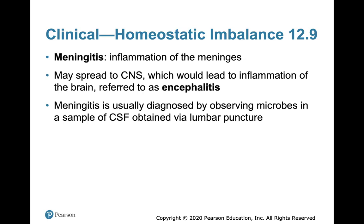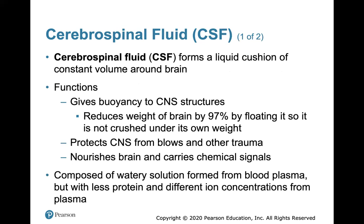Meningitis — whenever you see the suffix '-itis,' it means inflammation — so meningitis is inflammation of the meninges. It's extremely dangerous because it may spread to the central nervous system, potentially leading to encephalitis, inflammation of the brain. It's usually diagnosed by observing microbes in a sample of cerebrospinal fluid obtained via a lumbar puncture. Cerebrospinal fluid forms a liquid cushion of constant volume around the brain, gives buoyancy, reduces the weight of the brain, protects the CNS from trauma, and nourishes the brain. It's composed of a watery solution formed from blood plasma, but with less protein and different ion concentrations.